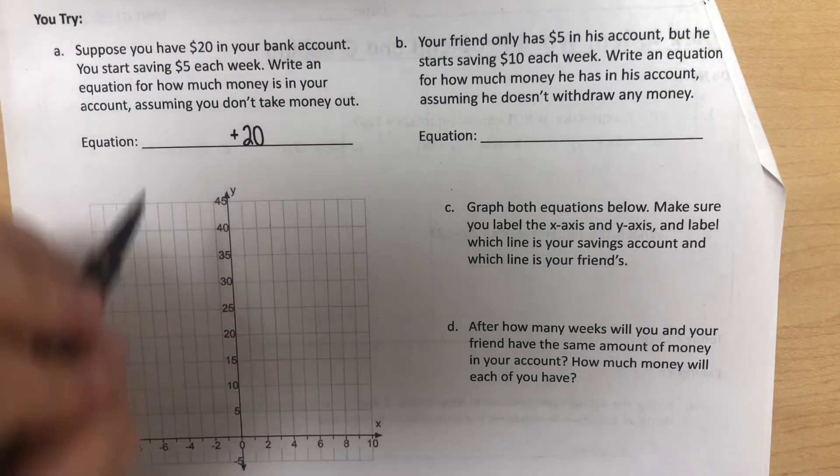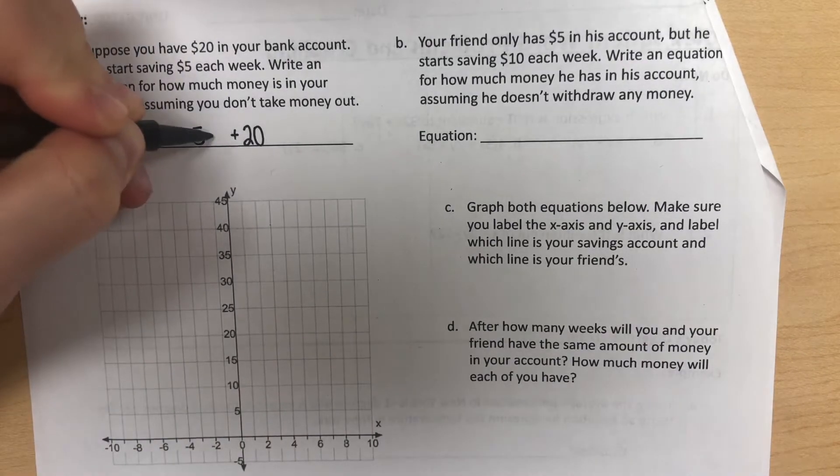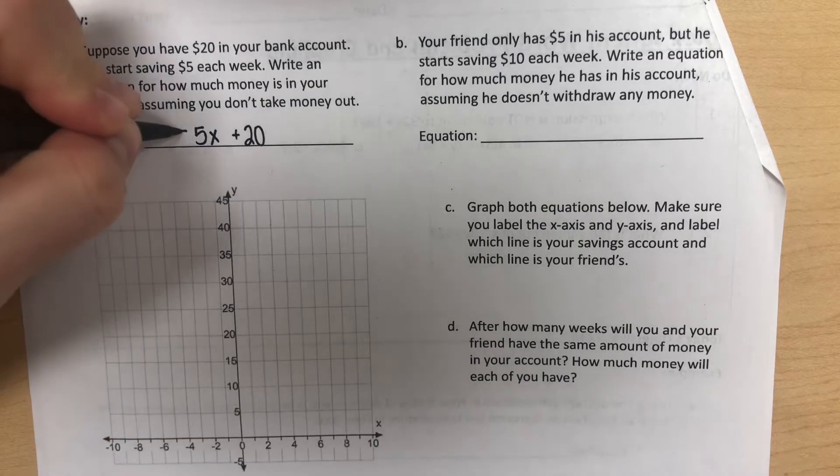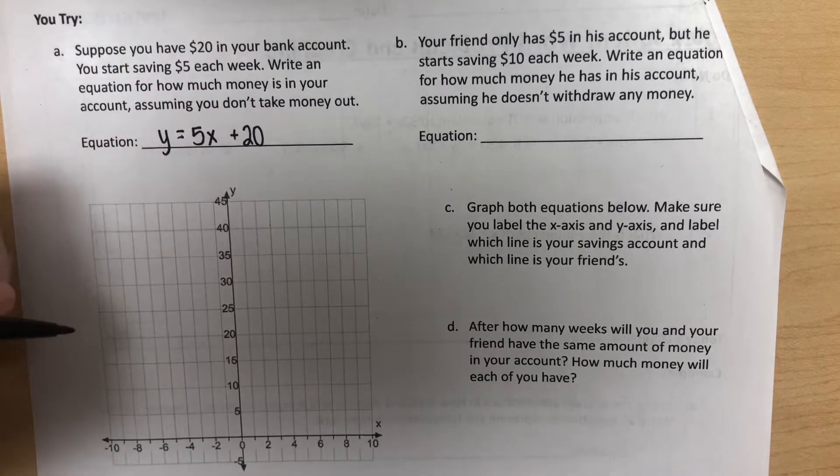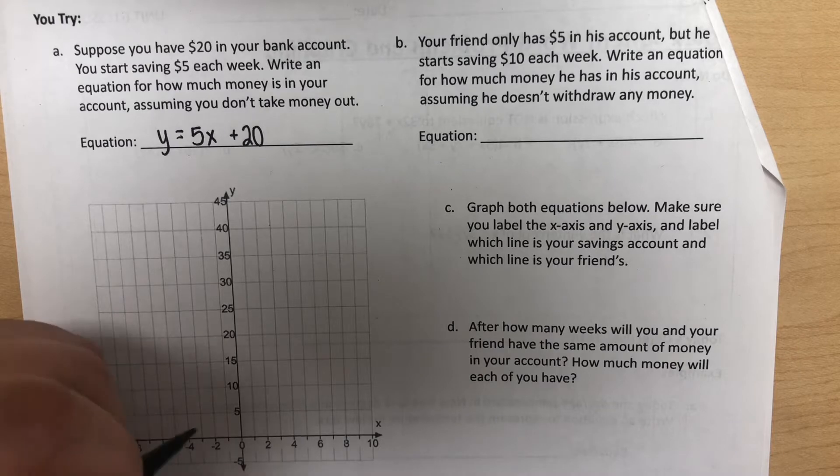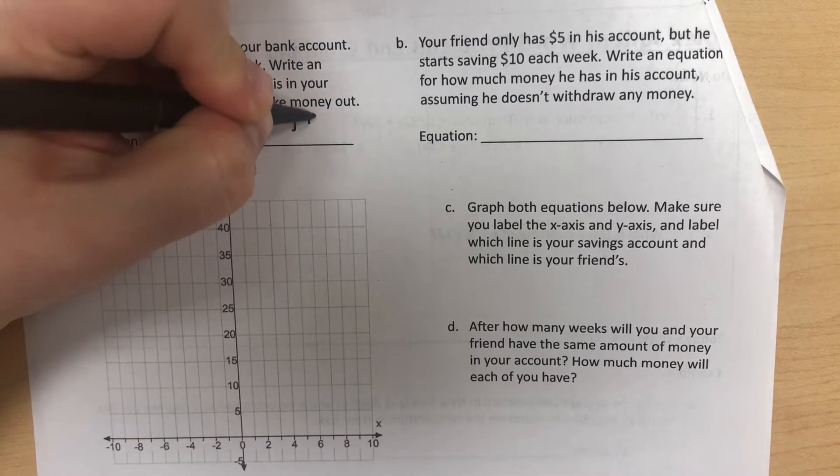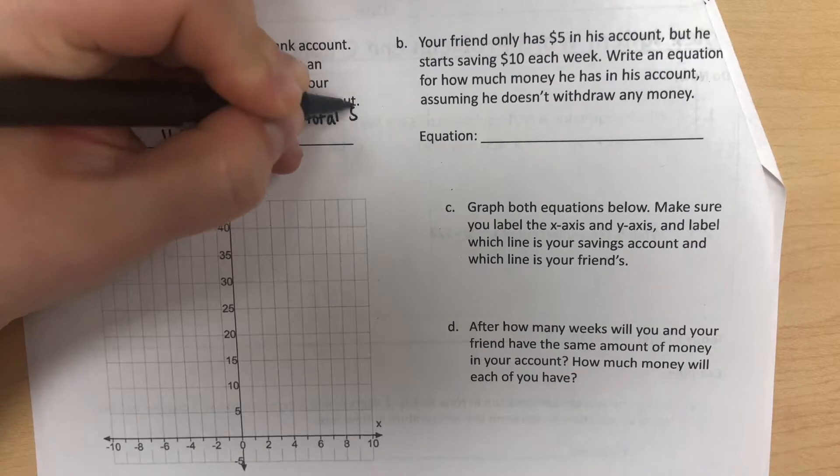And then you're saving $5 each week. That would represent our slope. It's increasing by $5 every one week. So they had this equation here. They were in the process of defining their variables.